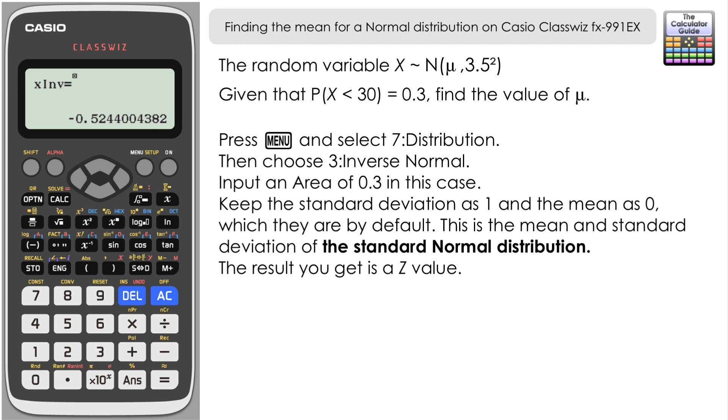So you may have come across the formula to calculate a z value which is z equals x minus μ over σ, where x is your x value, μ is your mean value, and σ is the standard deviation of the distribution and that will equal your z value.